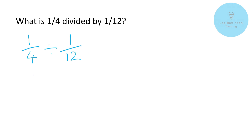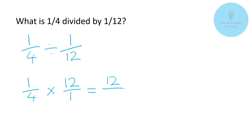Let's work through the process again. We take the second fraction and turn it upside down, giving us 12 over 1. Then we multiply: 1 times 12 gives us 12, and 4 times 1 gives us 4. We've got 12 divided by 4, which gives us 3.